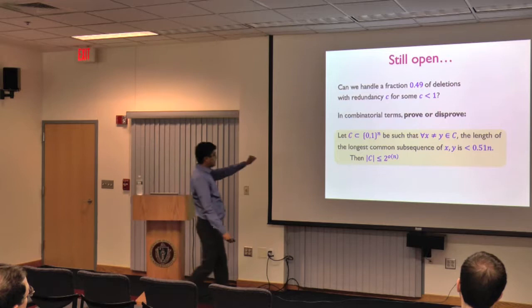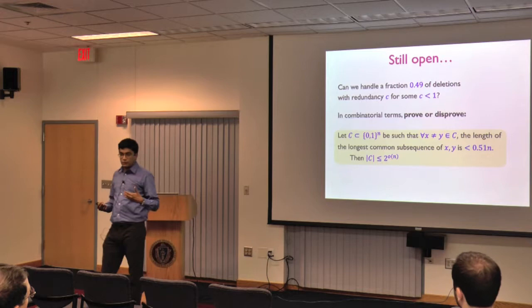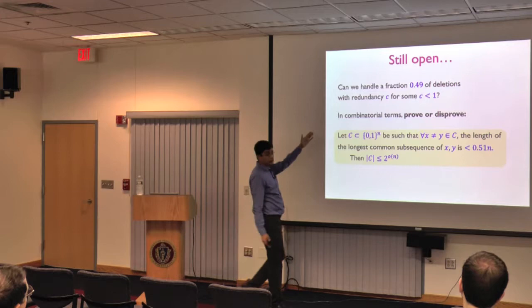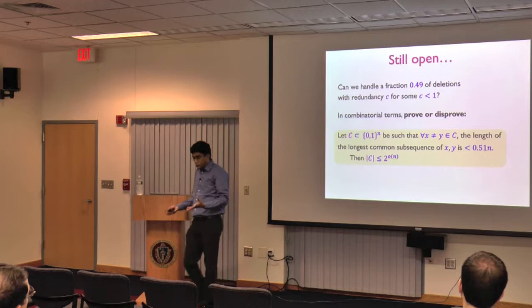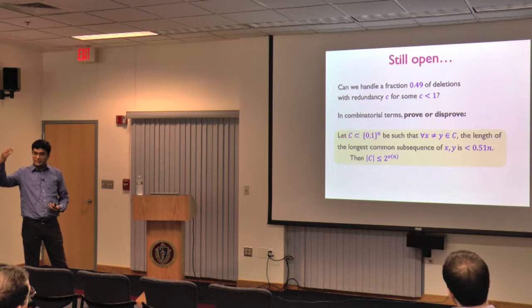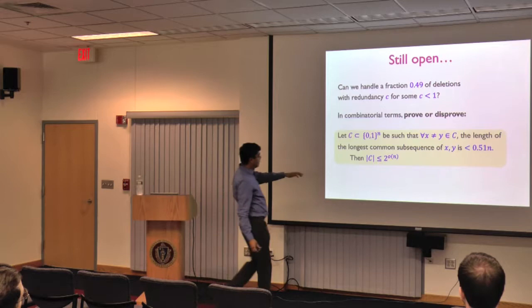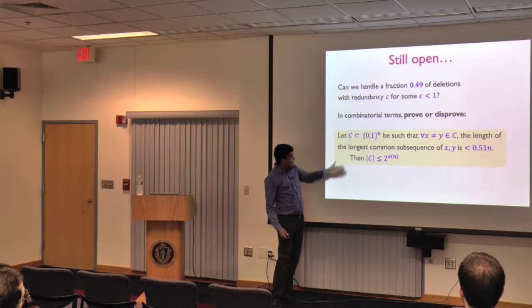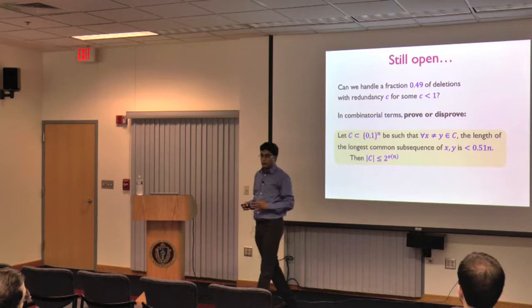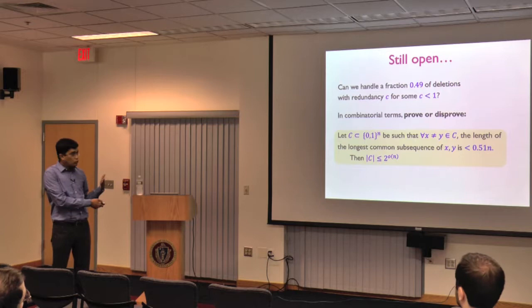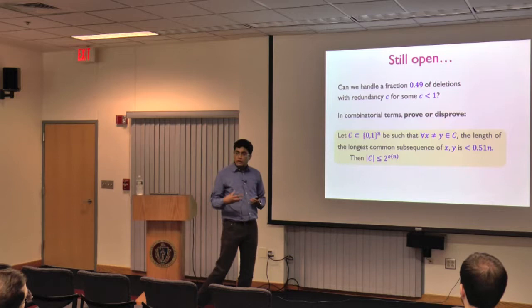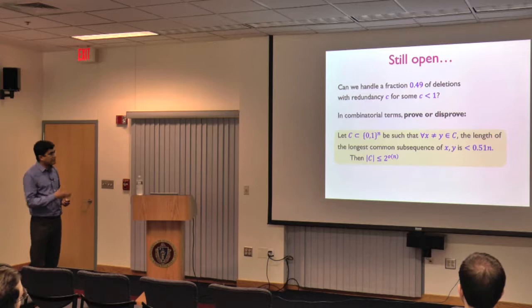The open problem: we achieve 41%, but is half the actual limit or is there some other non-trivial limit? Can you construct codes correcting a deletion fraction approaching one-half? This is a very accessible question in purely combinatorial terms: what dictates deletion correction is the longest common subsequence between two codewords. If two codewords share a long common subsequence, you can delete all but that subsequence and confuse them. The question is whether you can have a large code where any pair of distinct codewords has longest common subsequence at most 0.51*n.